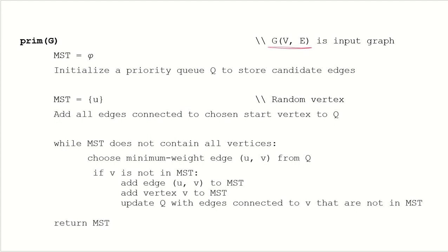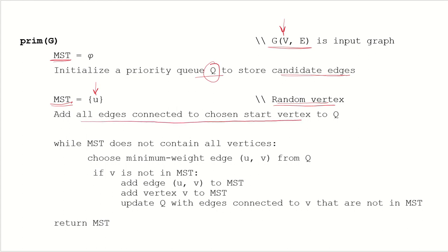This process continues until all vertices are included in the MST. Looking at the pseudocode: given a graph G with a set of vertices V and a set of edges, initially our MST is null. We initialize a priority queue Q which will store candidate edges — the edges that can be added to the MST. We start with any random vertex chosen from the set of vertices; let's say we choose vertex U and add it to the MST.